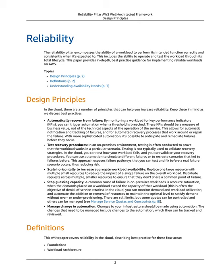In the cloud, you can monitor demand and workload utilization, and automate the addition or removal of resources to maintain the optimal level to satisfy demand without over- or under-provisioning. There are still limits, but some quotas can be controlled and others can be managed. See Manage Service Quotas and Constraints, p. 8. Manage Change in Automation: Changes to your infrastructure should be made using automation. The changes that need to be managed include changes to the automation, which then can be tracked and reviewed.